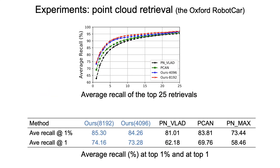We compare our method against two state-of-the-art approaches. Here we show two models of our method with different numbers of local features being used to compute the global descriptors. From the recall curves of the top-25 retrieval matches, both of our models outperform the other two approaches consistently. We also specifically evaluate the average recall at top 1% and the best match. Again, our approach outperforms the other methods.